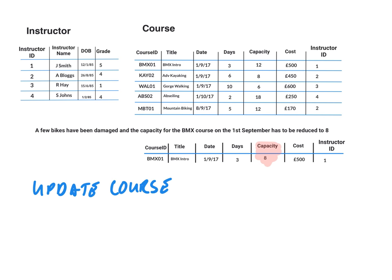First, we select the table. Then we need to specify the new values, so we're going to set the capacity equal to 8. Now it is really important that we specify which records we want to update. Because if we don't and we run that query, we would change every single capacity to 8, and that's not what we want to do. We only want to update one particular record.